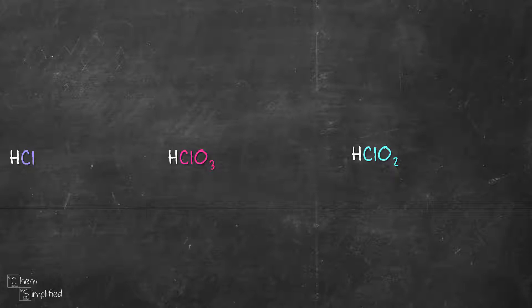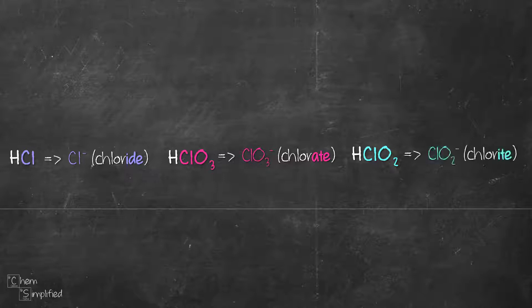The guidelines in naming acid is very simple. We look at the name of the anion. For HCl, the anion is chloride, which is Cl-. For HClO3, its anion is ClO3- which is called chlorate. And the anion for HClO2 is ClO2- which is called chlorite. ClO3- and ClO2- are both polyatomic ions.